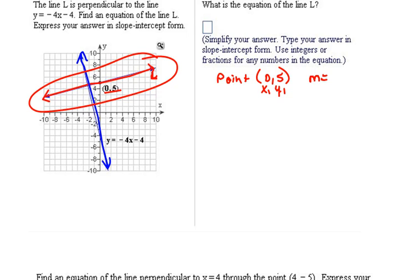We also, though, have to have a slope. They didn't give us a slope. Now, because they've given us a picture here, we could count up and over, rise and run. But to be absolutely accurate, we can figure out our slope that we need off of this line.